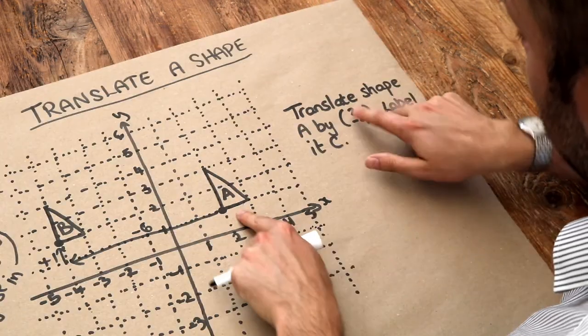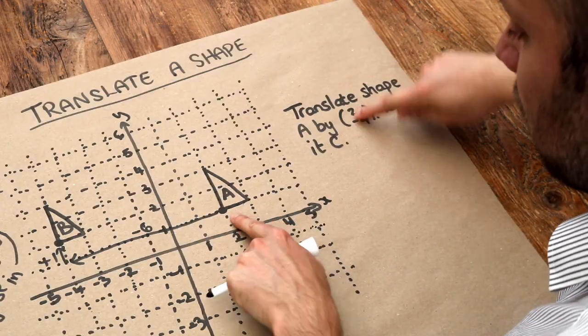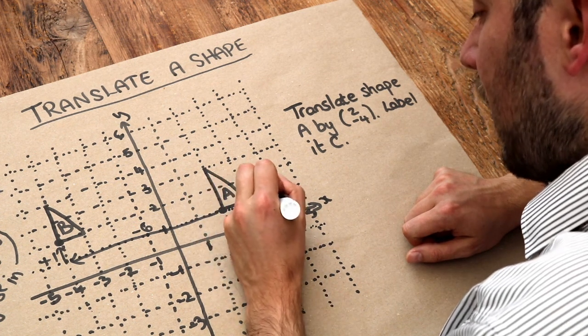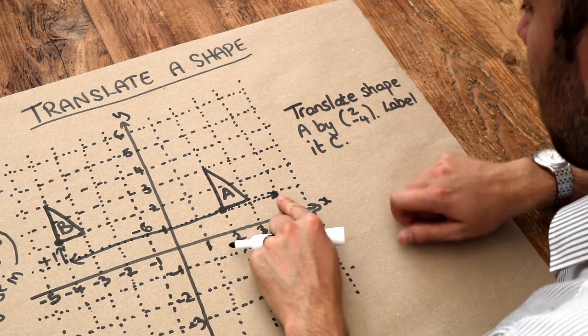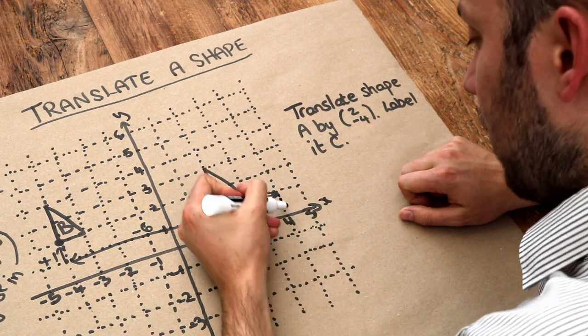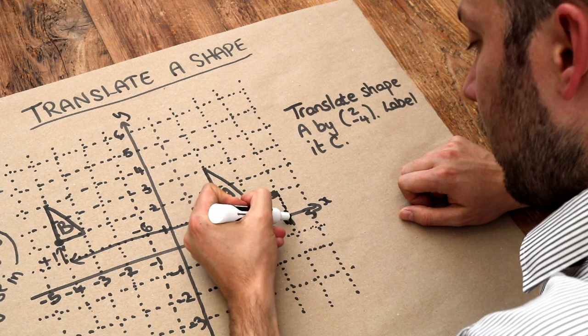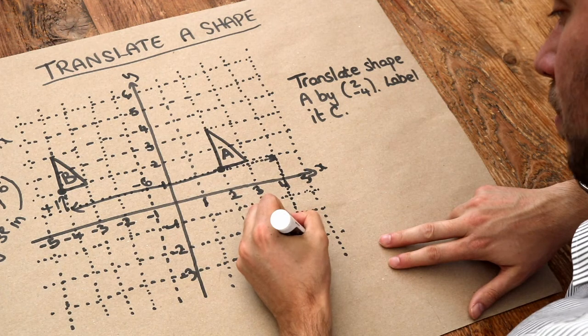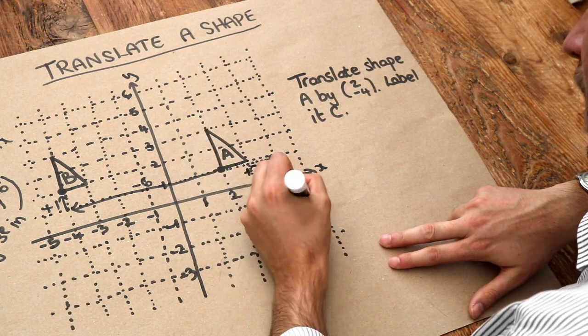It's saying that the x value is changing by 2, so the x value is increasing by 2, going from here to here. Then the y value is decreasing by 4, so the y value is going down by 4: 1, 2, 3, 4, and it's ending up here. So that's plus 2 and minus 4.